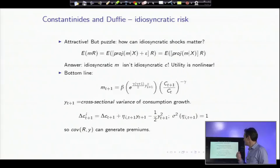But there's a puzzle. How can idiosyncratic shocks matter? Let me remind you of a simple piece of algebra we did long ago. E(MR) is the same as the projection of M on X plus residual times R, which is the same as the projection of M on X times R. That almost shows that idiosyncratic variation epsilon can't make any difference because it's the common component that matters for asset pricing. How do we escape that puzzle?